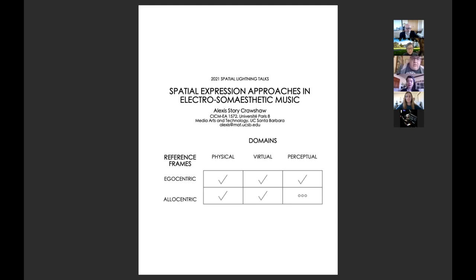I propose that space in ESM is its most qualitatively idiosyncratic feature. Due to the nature of somatic sensation, somatic sound objects and events are typically experienced as being localized at the threshold of the perceived body and the perceived external environment, or within the perceived body itself. The potential for spatial precision and scope over the canvas of the body self is promising for new kinds of musical expression. Through my practice and using artistic proofs of concept, I have identified two key dimensions for consideration in the composition of perceivable spatial nuances: domain and reference frame.